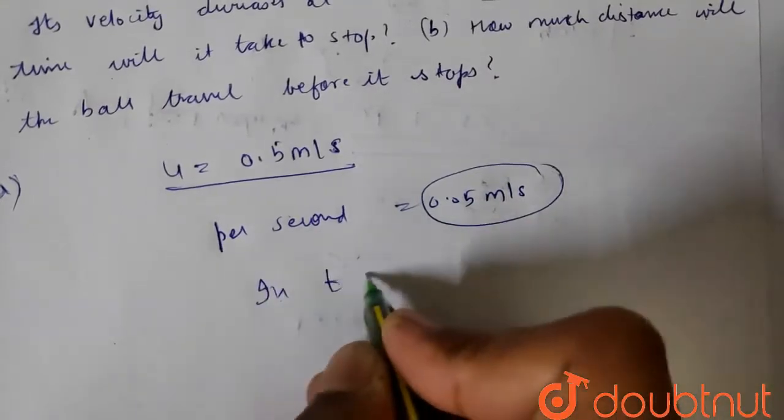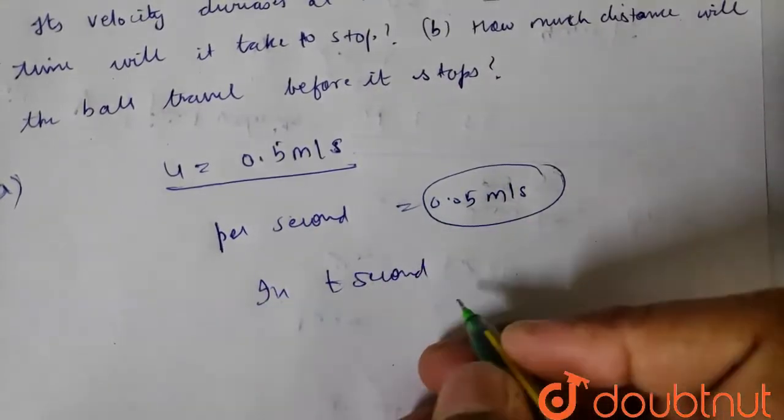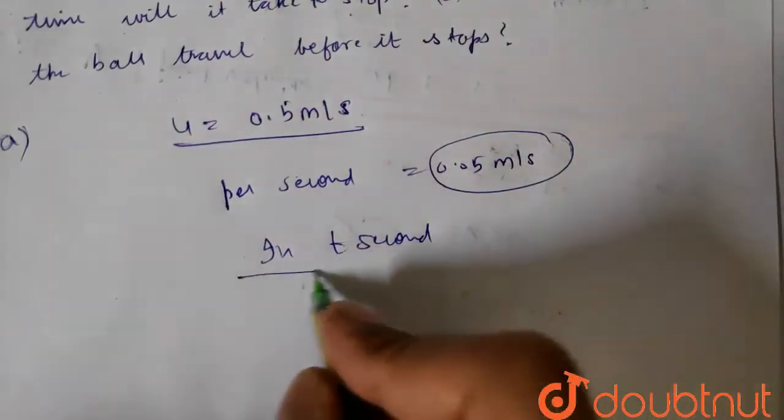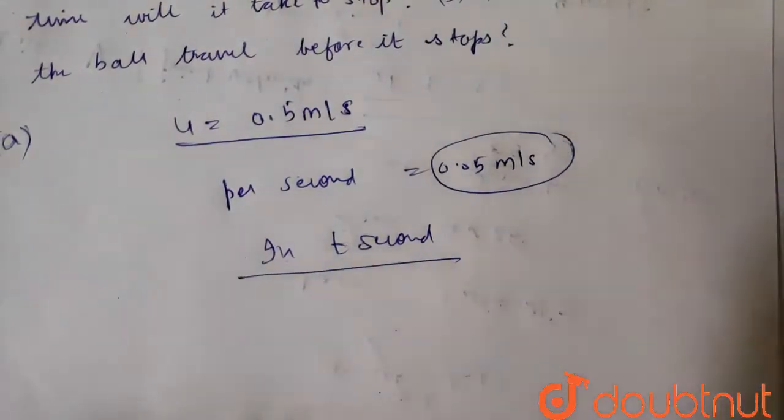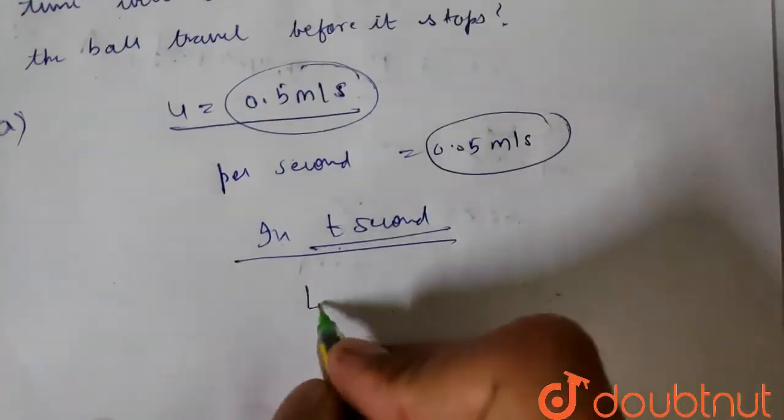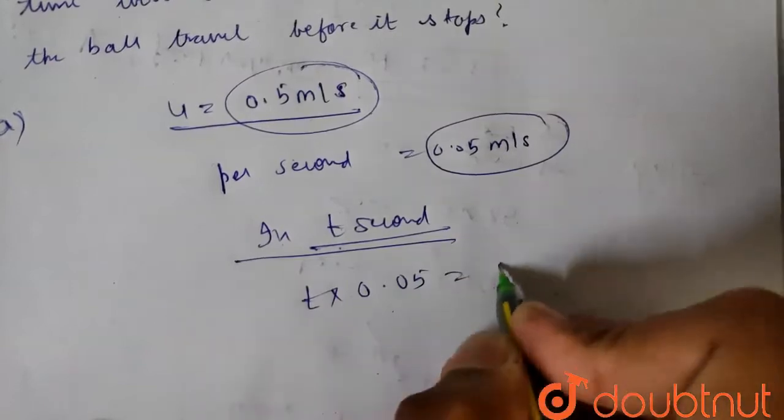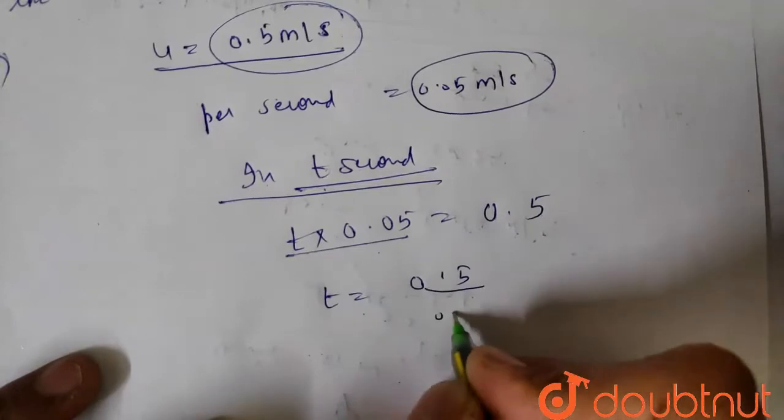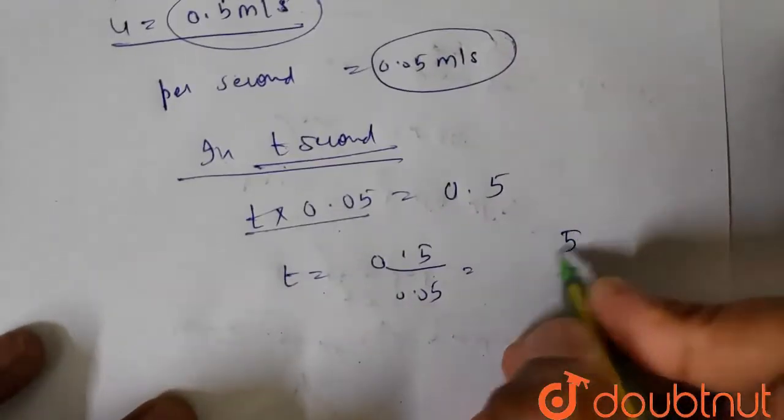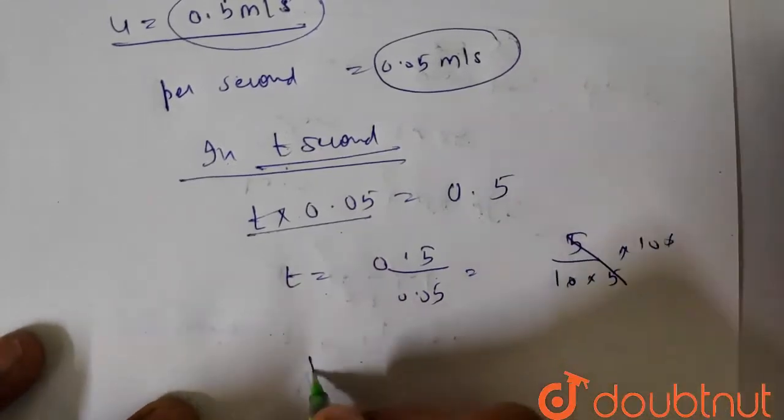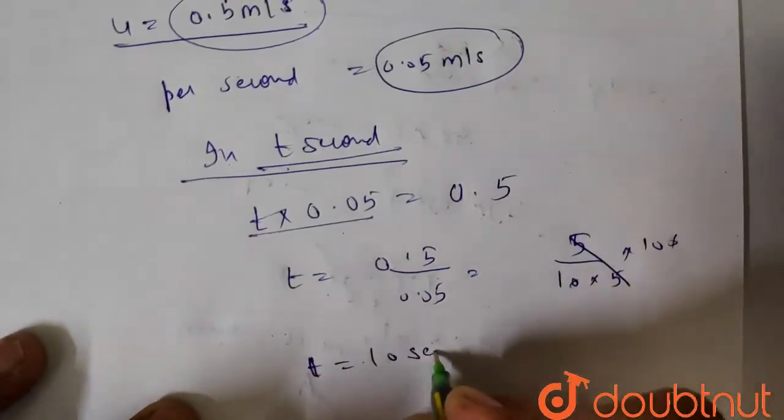So I will tell you that in t seconds its velocity is decreasing. So how much time will it take? 0.05 meter per second, and for t time it takes, so t into 0.05 equals to 0.5. So t equals to 0.5 by 0.05, which is just 5 by 10 into 5 by 100. So t comes to 10 seconds, actually.